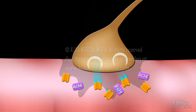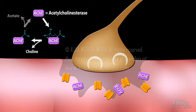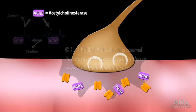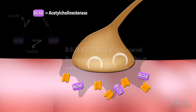Acetylcholine is rapidly cleared from the synapse by the enzyme acetylcholinesterase, which binds to acetylcholine and hydrolyzes it into choline and acetate. The enzyme molecule quickly recycles itself each time, ready for another round of reaction.